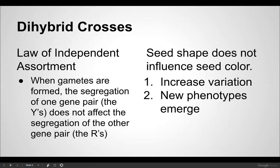Di-hybrid crosses deal with something known as the law of independent assortment. When gametes are formed during meiosis, the segregation of one gene pair — the Y's — does not affect the segregation of the other gene pair — the R's. They are inherited independent of each other; seed shape does not influence seed color. This helps increase variation in a population, which is very important to the health of a species, and you wind up getting new phenotypes and new recombinations of genes.